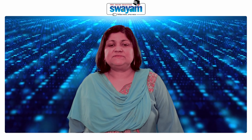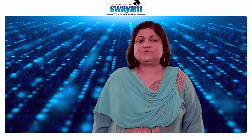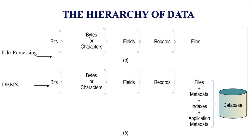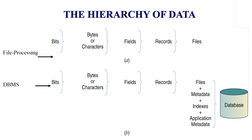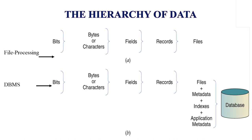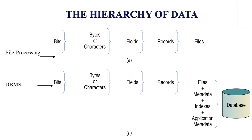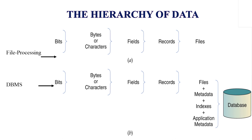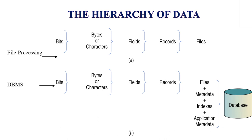Another comparison is in terms of hierarchy of data. In file processing system, the smallest storage is bits; collection of bits is byte; collection of bytes is field; collection of fields is record; and collection of records is file. In a database, the elements include files, metadata, indexes, application, and application metadata.